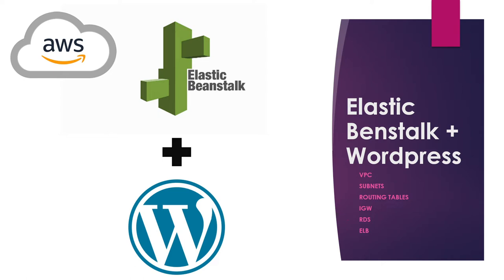First, we have to create all the dependencies such as VPC, Subnet, Internet Gateway, and Routing Tables. A WordPress website needs a database to work, which means we will need to create an RDS during the creation of the Beanstalk resources. We will also need an Elastic Load Balancer. Those resources will need to be on multiple AZs, which means multiple data centers, so we need to create multiple subnets on multiple AZs during the creation of our VPC.